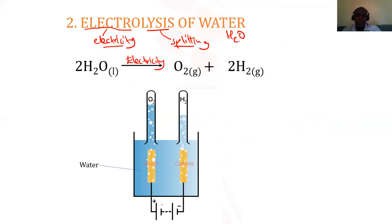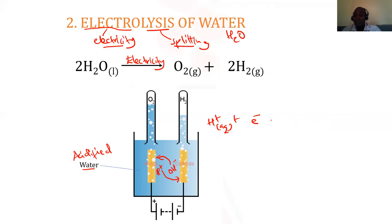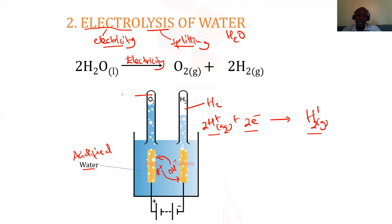When you complete this circuit, water is broken down into corresponding ions — the hydroxide ions and the hydrogen ions. It is sometimes better to use acidified water to simplify the process. The hydrogen ions go to the cathode while the hydroxide ions go to the anode. At the cathode, hydrogen ions pick up electrons and become hydrogen atoms, which combine to form diatomic hydrogen gas, H₂.